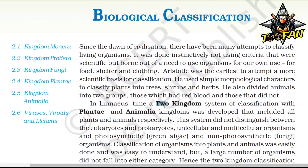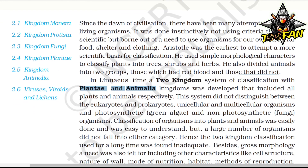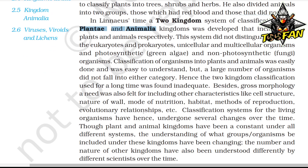Linnaeus's Two Kingdom System of Classification with Plantae and Animalia kingdoms was developed to include all plants and animals respectively. This system did not distinguish between eukaryotes and prokaryotes, unicellular and multicellular, or photosynthetic green algae and non-photosynthetic fungi. Hence, the two-kingdom classification used for a long time was found inadequate.